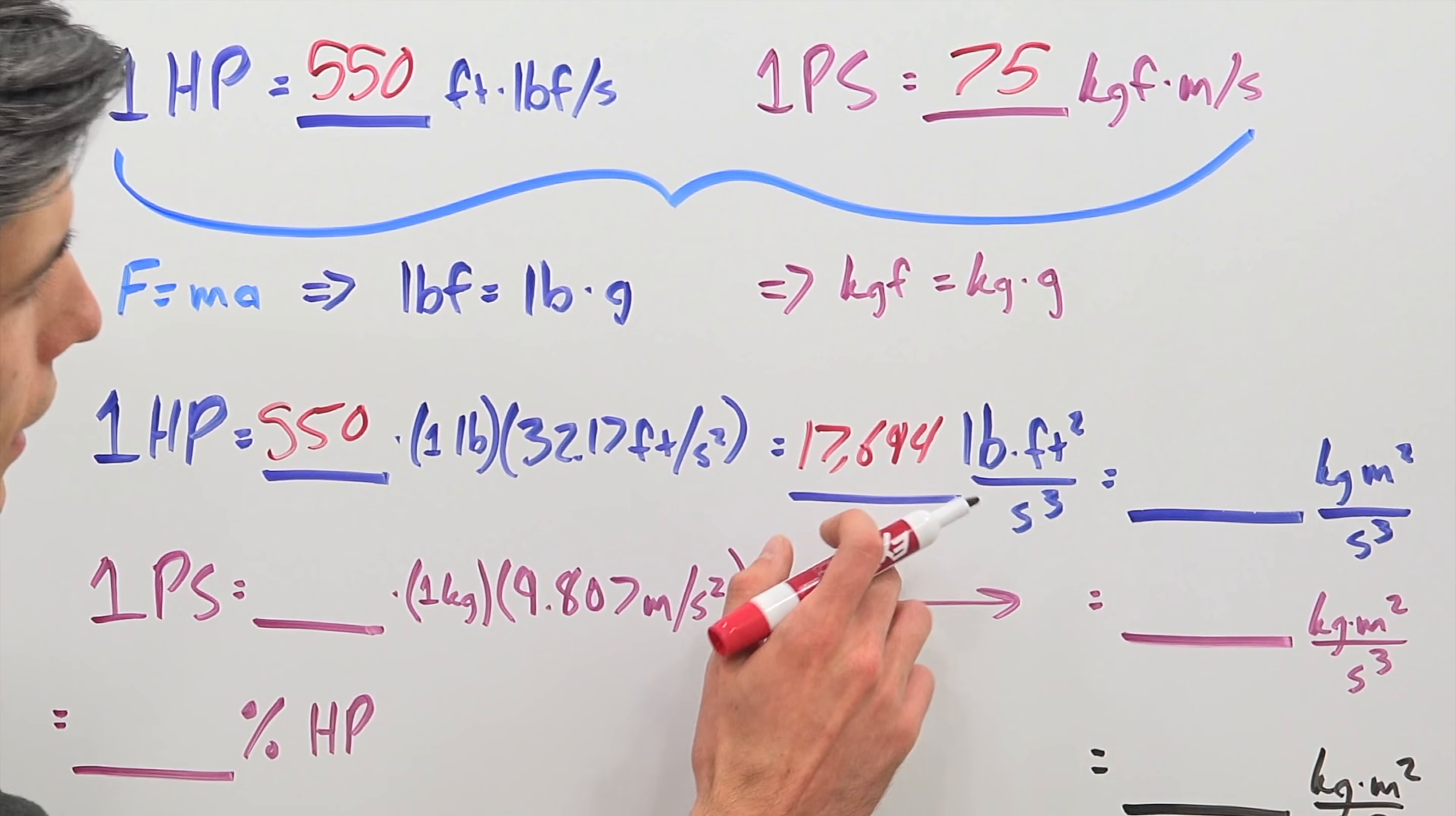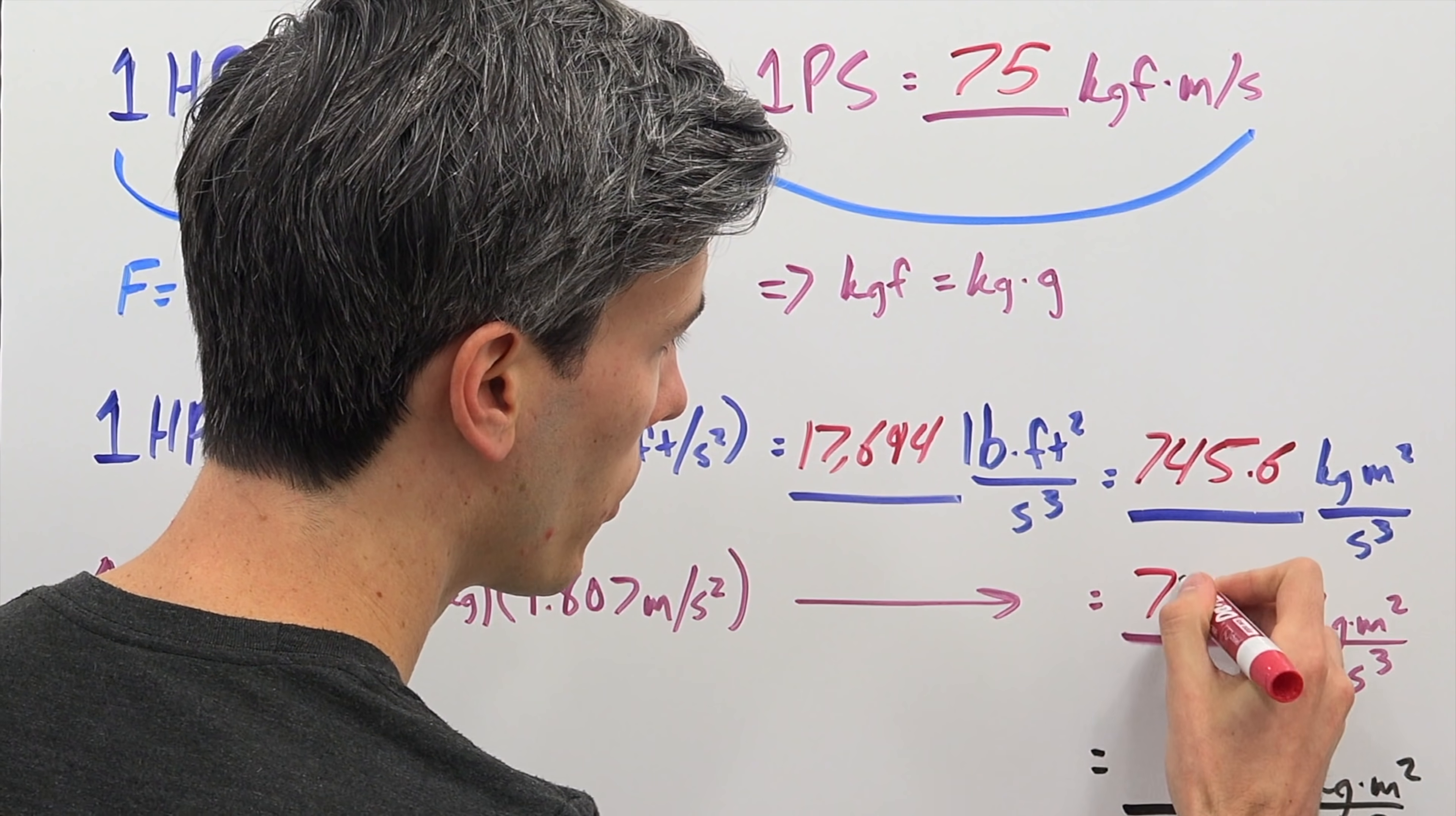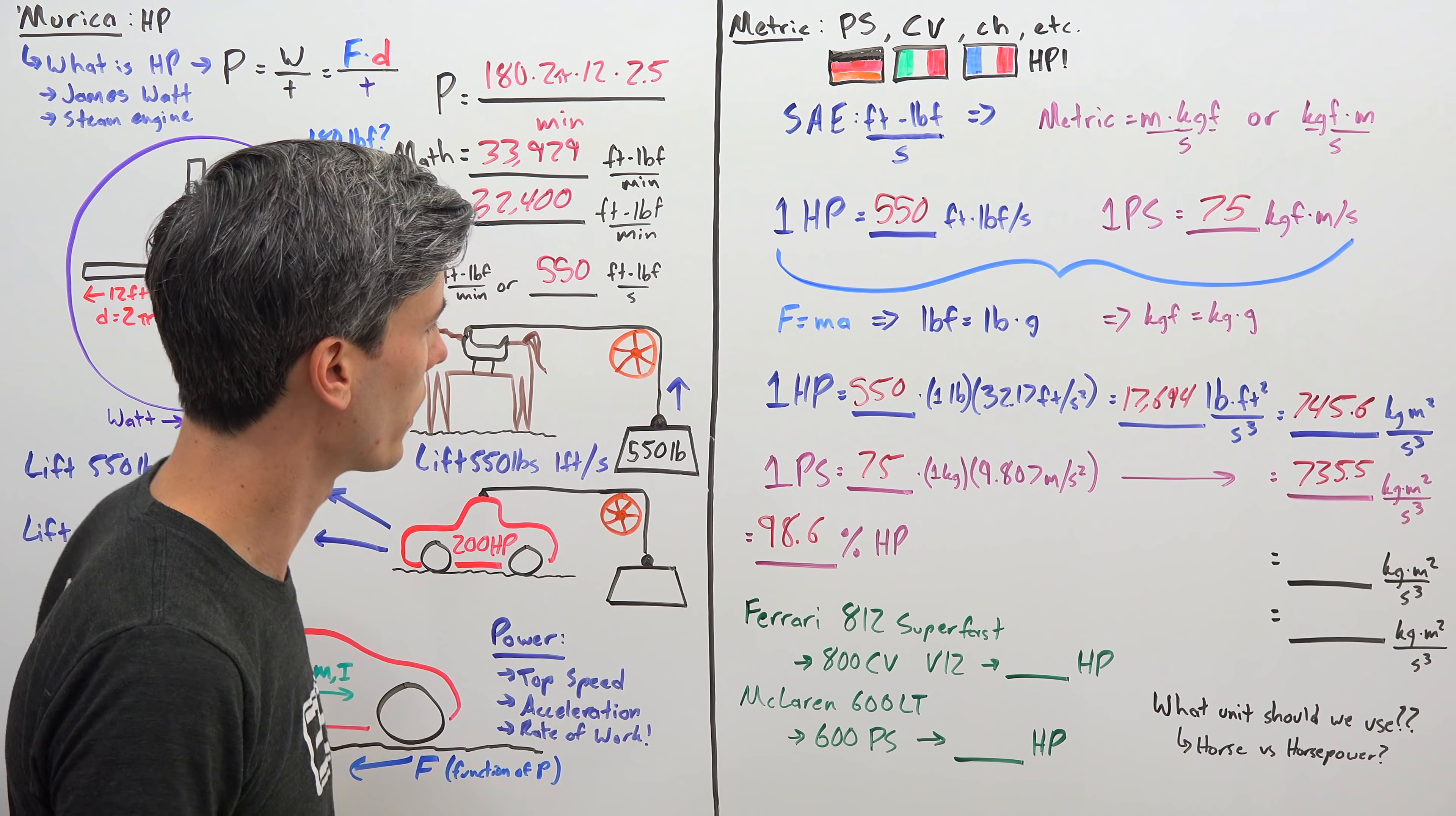So if we were to convert this to metric we would get 745.6 kilogram meters squared per second cubed. Now one metric horsepower we know is 75 kilogram force meter per second so we're multiplying that by gravity 9.807 and we get 735.5 and as you'll notice these two numbers are not exactly the same thing. In fact one metric horsepower is equal to 98.6, if you take this number and divide it by this number, 98.6 percent of one American horsepower.